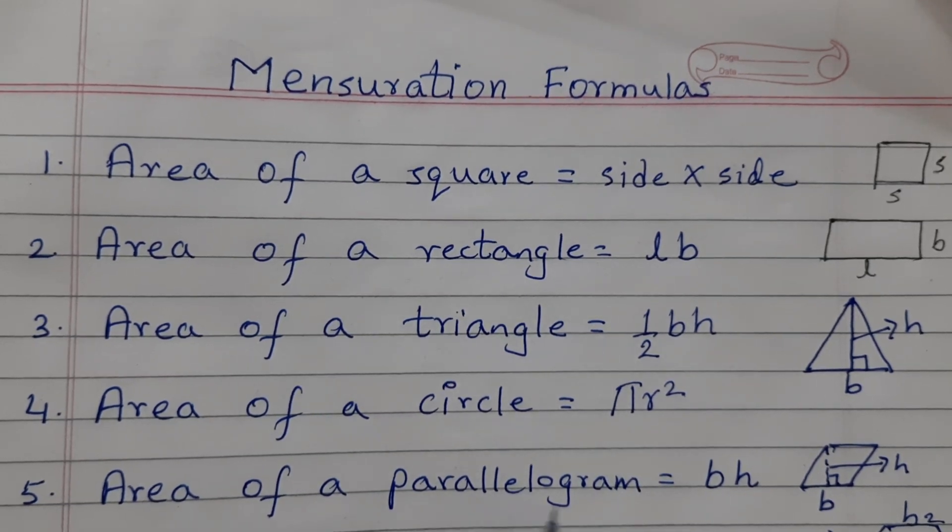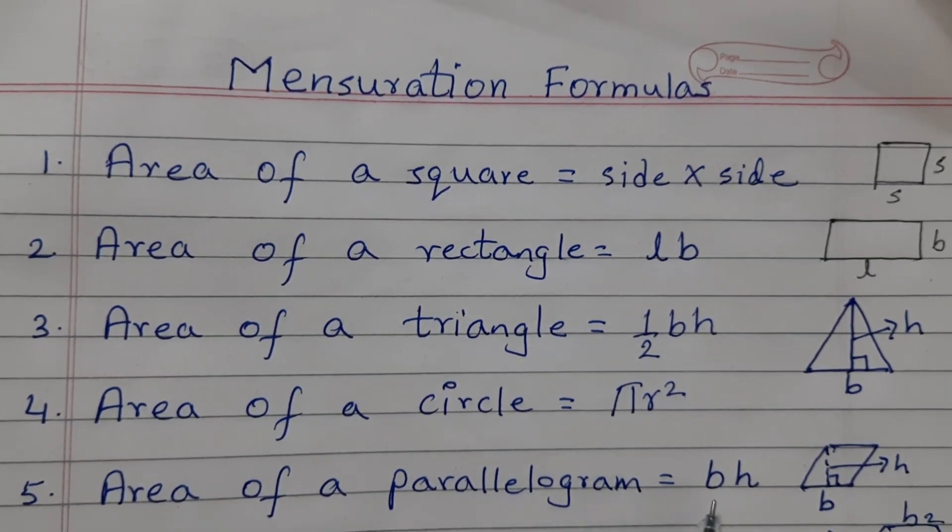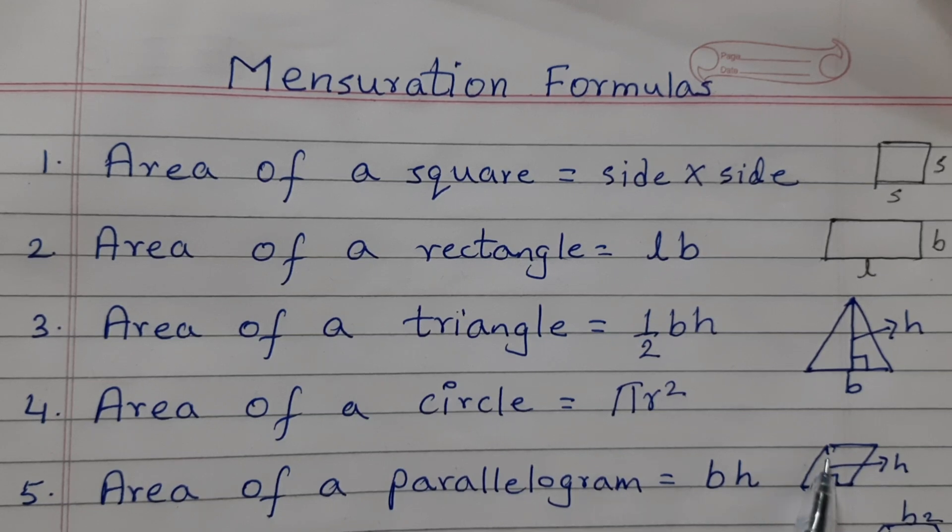Area of a parallelogram is equal to base into height. So B stands for base, H stands for height. This is the base and again height is the perpendicular from the opposite vertex.